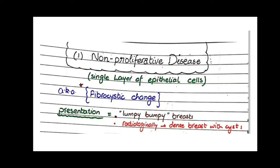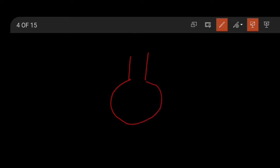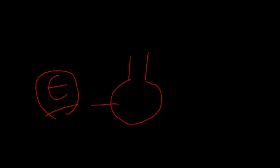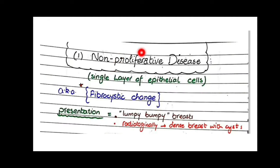The first subtopic is non-proliferative disease. In this diagram you can see a duct and an acinus, both lined by epithelium. Non-proliferative epithelial changes mean that this epithelium is not proliferating — the duct and acinus are still lined by a single layer of epithelial cells, with no proliferation occurring.